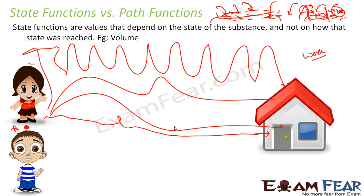Path function is something which is dependent on the path you take. For example, here work is a path function — because from here to here, if she is going along four different paths, she will have to do different amounts of work to reach the destination. So the work done will be a path function that depends on the path taken.